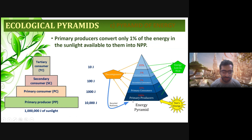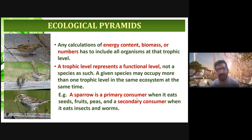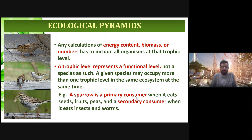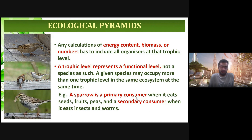The loss of energy finally goes to the decomposers, and their energy and nutrients go back to the soil. Any calculation of energy, biomass, or numbers must include all organisms at that trophic level — we cannot include only selected organisms. A trophic level represents a functional level, not a species.